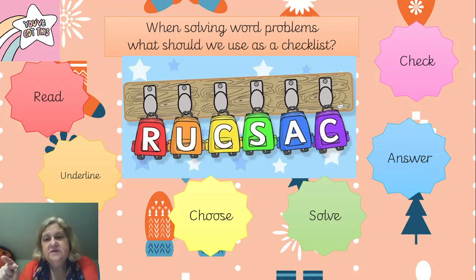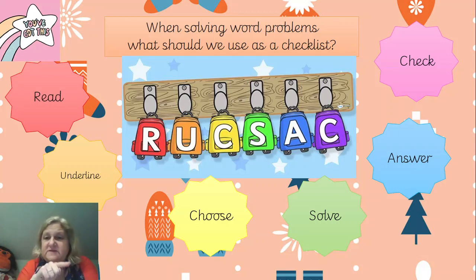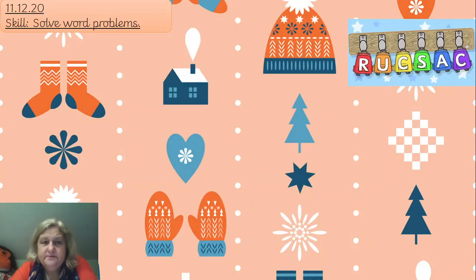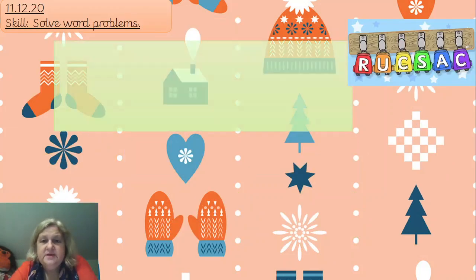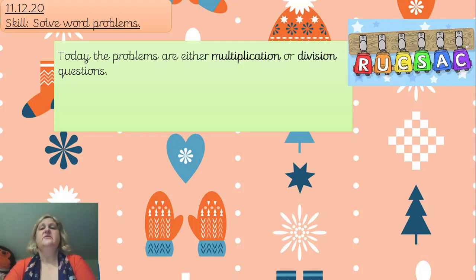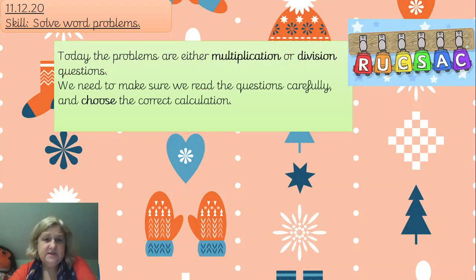If it's a division one, you can use the inverse like I showed you in the starter: take your answer, then multiply it by the divisor, and you should come out with the dividend. Just work it back through. So keep the rucksack in mind - the problems today are either multiplication or division questions, and we need to make sure we read carefully and choose the correct calculation.